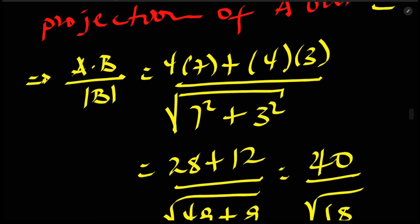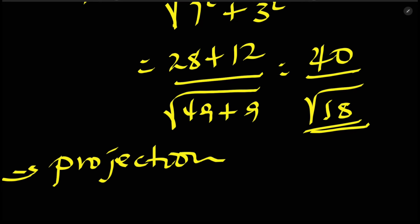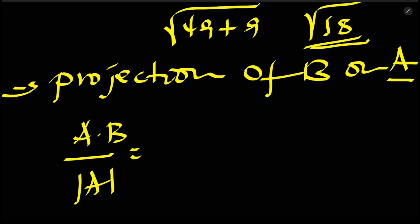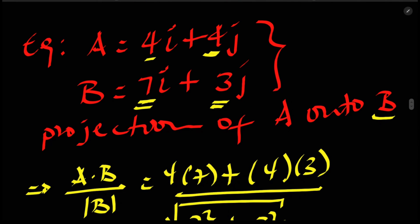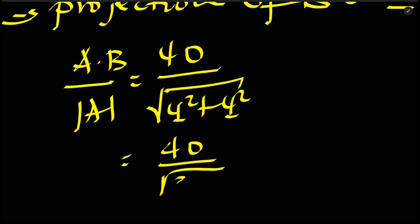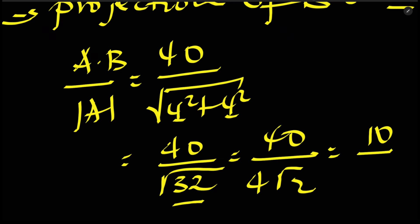For the projection of B on A, we take A dot B divided by the magnitude of A. The magnitude of A is the square root of 4 squared plus 4 squared, which is the square root of 32. Simplifying gives us 4 root 2, so the projection of B on A equals 10 over 4 root 2.